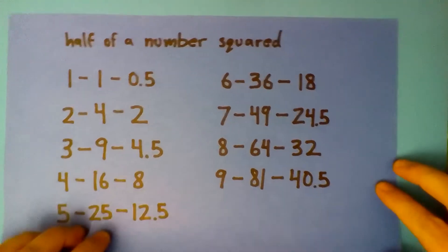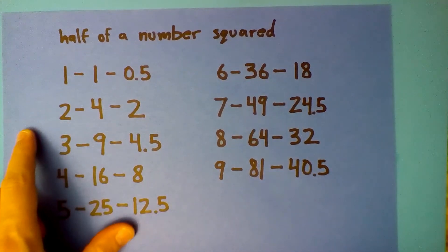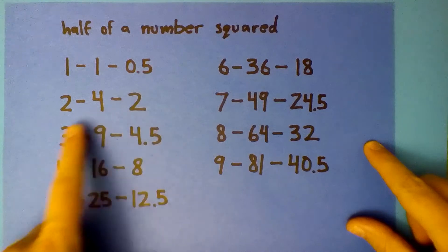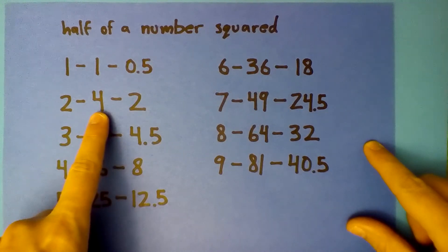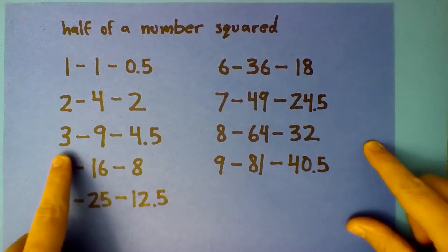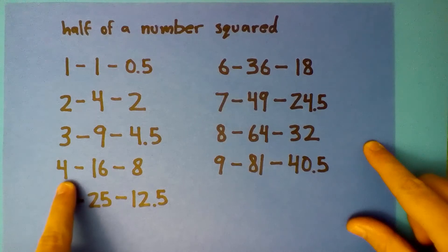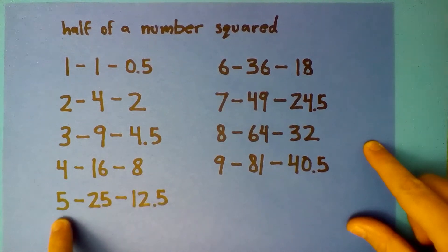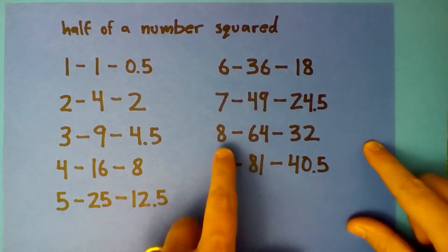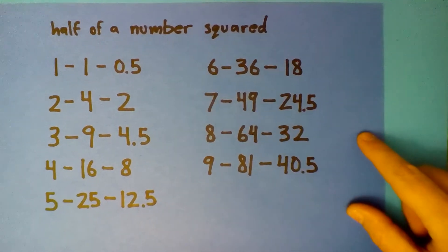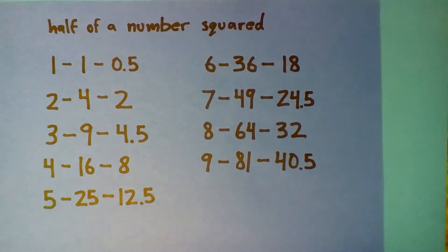The next concept: what is half of a number squared? You need to remember this as we're taking square roots. Half of 1 squared is 0.5. Half of 2 squared is 2. Half of 3 squared is 4.5. Half of 4 squared is 8. Half of 5 squared is 12.5. Half of 8 squared is 32. You'll learn these, but for now if you want to write these down and keep them with you, we'll use these while we take square roots.